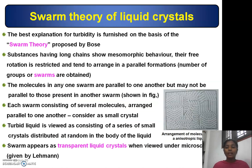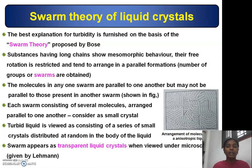Swarm Theory of Liquid Crystals. The best explanation for turbidity is given on the basis of Swarm theory, proposed by Bose. Substances having long chains show mesomorphic behavior; their free rotation is restricted and they tend to arrange in a parallel formation. This parallel formation consists of groups or swarms. The molecules in any one swarm are parallel to one another, but may not be parallel to those in another swarm.